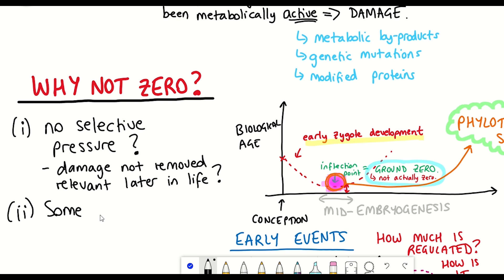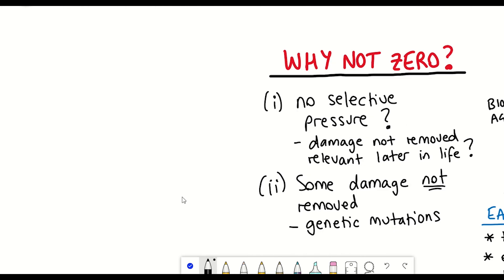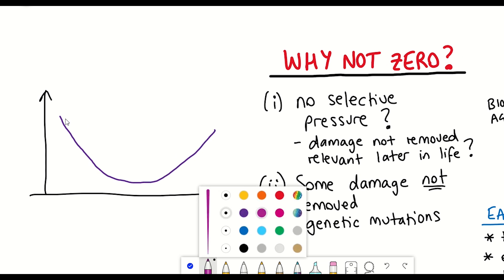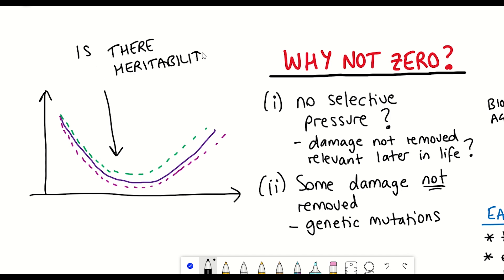The second point is that some damage simply cannot be removed — the most obvious example being genetic mutations. This suggests there could be some heritability of the biological age at ground zero, and therefore variance among different individuals within a population, between sexes, and across different species.